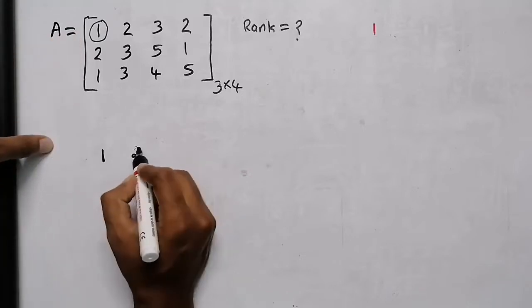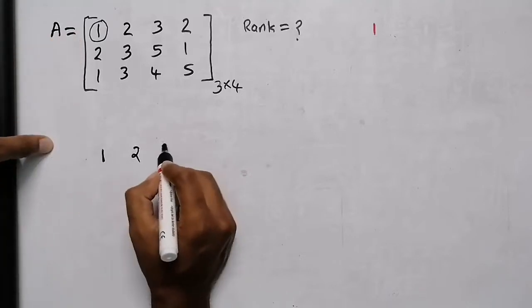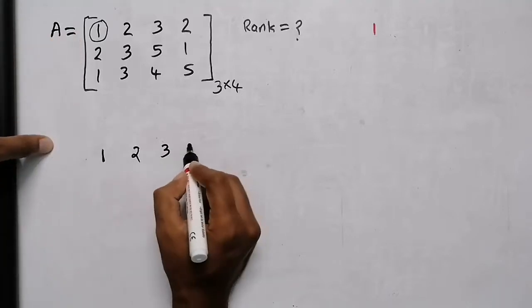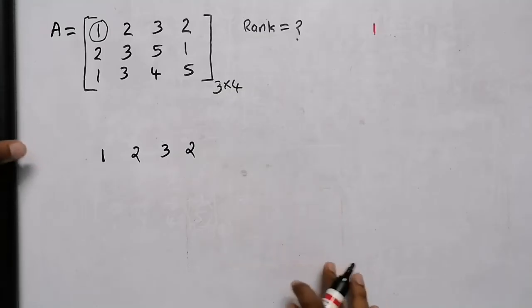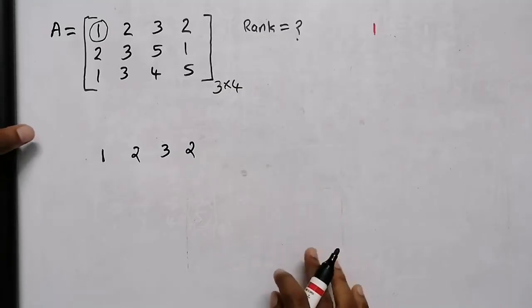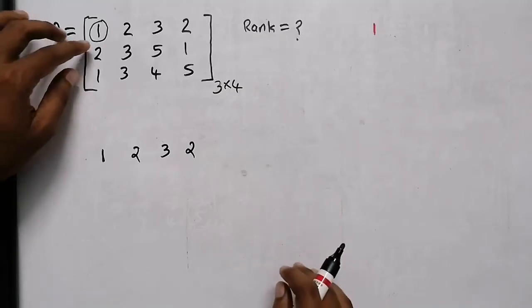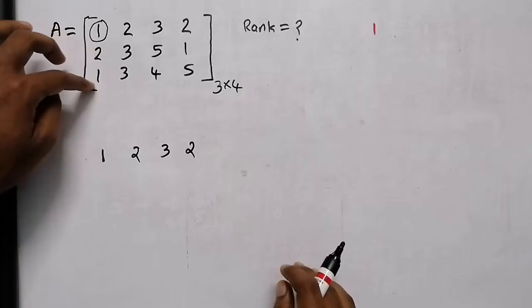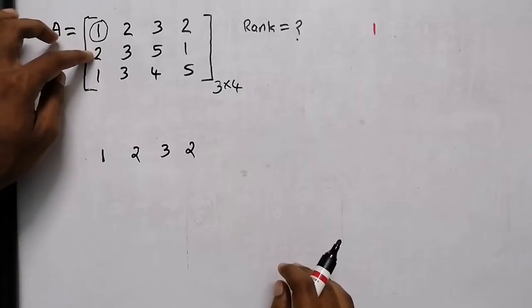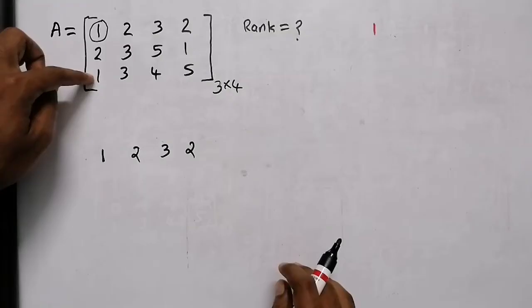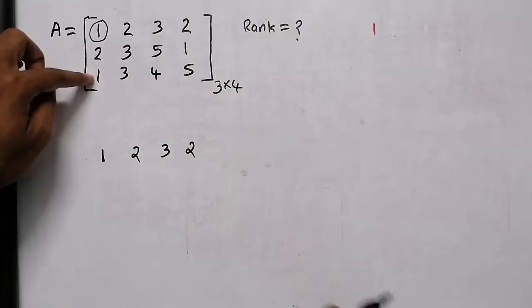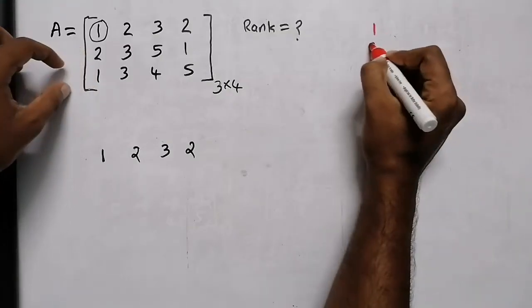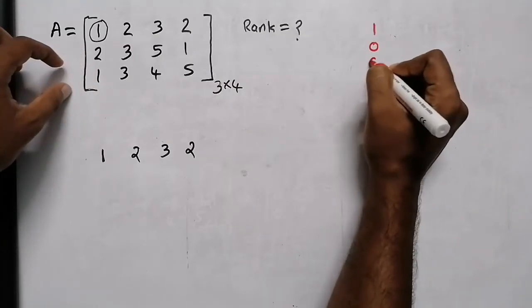1, 2, 3, 2. This row is full. There is 1, this row is full. We have zero.